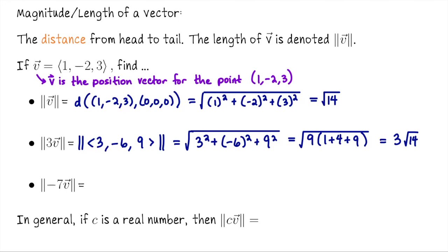The length of 5V would be 5 times the square root of 14. What happens if the scalar is negative? With negative 7 times vector V, the negative sign flips the direction of V to point the exact opposite way, but it still lengthens V by a factor of 7. Although the direction has changed, we're only computing the length, so the length of negative 7V is 7 times the square root of 14. The negative sign flipped V to point the opposite direction, but that doesn't affect the length. In general, if C is a scalar, the length of C times V equals the absolute value of C times the length of V.